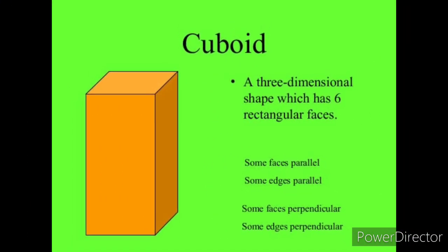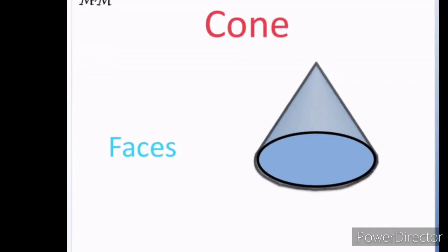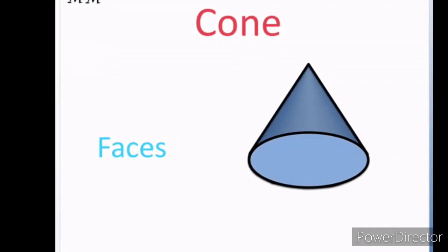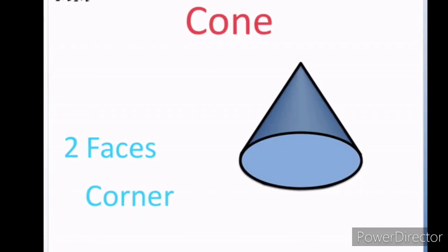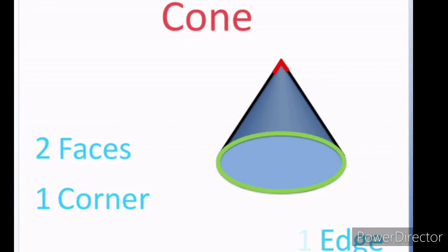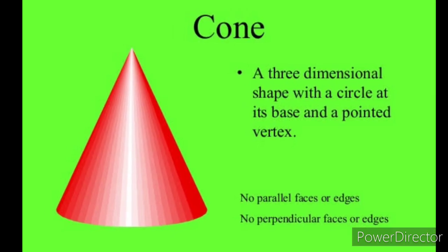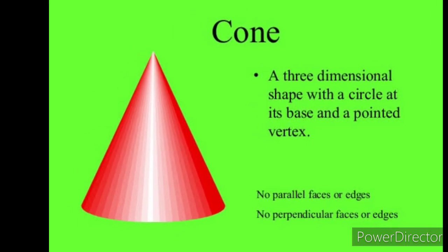Okay, understood cuboid? Next we'll see a cone. So how many faces does cone have? Two faces. And corner? Only one corner it has. Two faces and edge, only one edge. Okay, this is a cone.